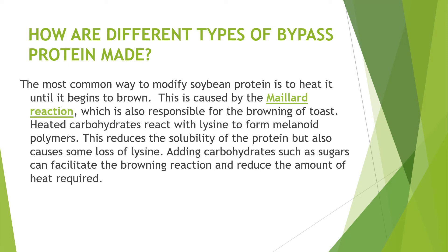How are different types of bypass protein made? The most common way to modify soybean protein is to heat it until it begins to brown. This is caused by the Maillard reaction, which is also responsible for the browning of toast. Heated carbohydrates react with lysine to form melanoid polymers, which reduces the solubility of the protein but also causes some loss of lysine. Adding carbohydrates such as sugar can facilitate the browning reaction and reduce the amount of heat required.